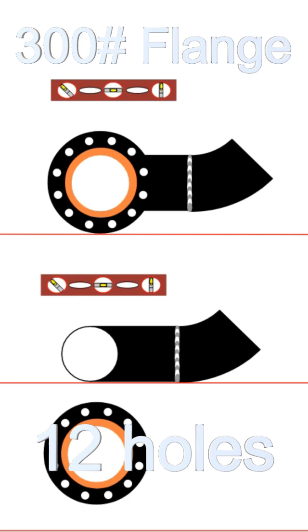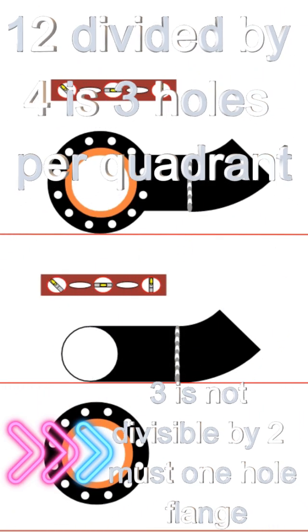The 300 pound flange has 12 holes. When you take the 12 holes divided by four, it gives you three per quadrant.